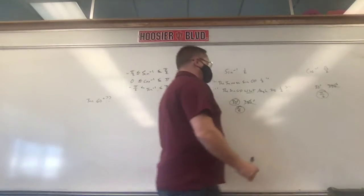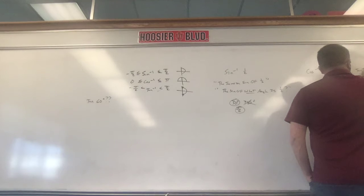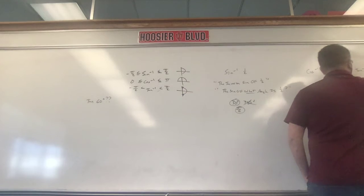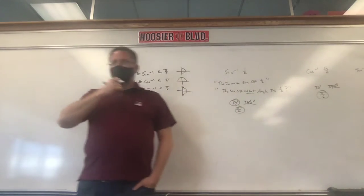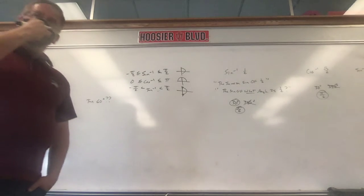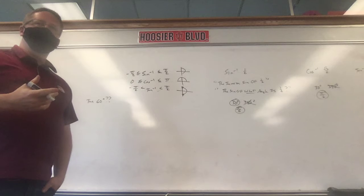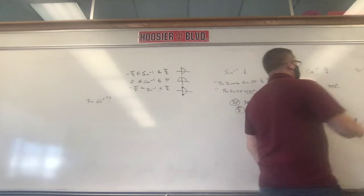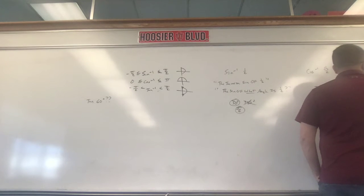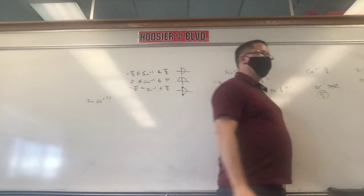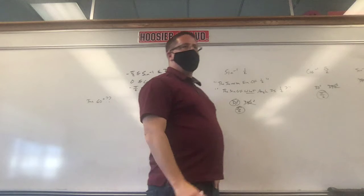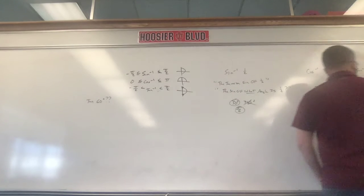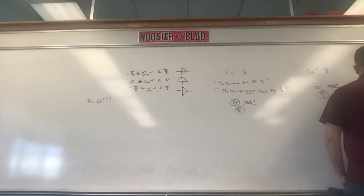The inverse tangent of negative 1 — this is a tougher one. There are two spots where tangent equals negative 1: 135 degrees and 315 degrees. We cross off 135 because for inverse tangent you have to look at the right side, and 135 is on the left side. In radians, 315 degrees is 7 pi over 4.